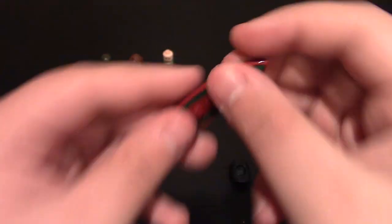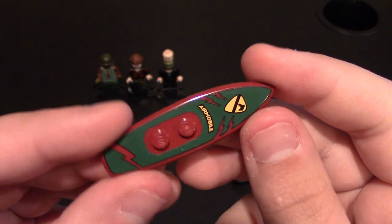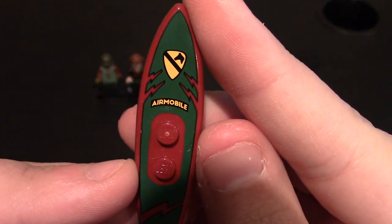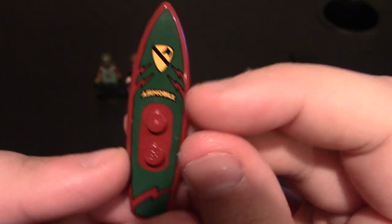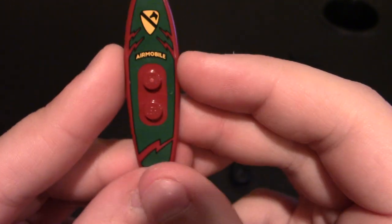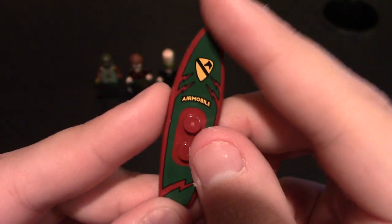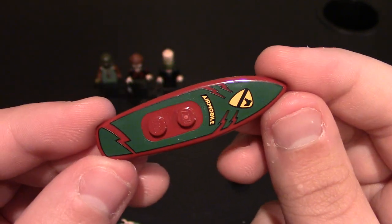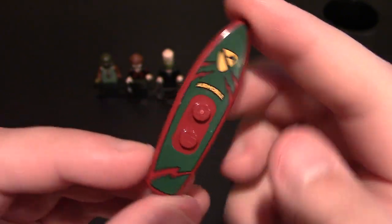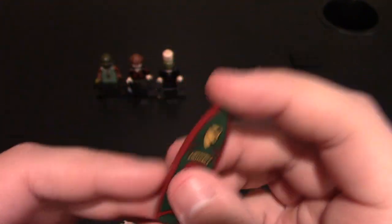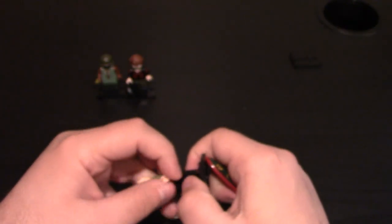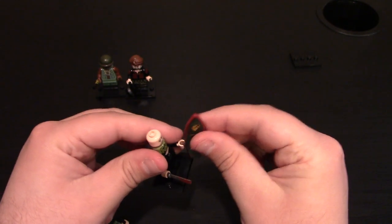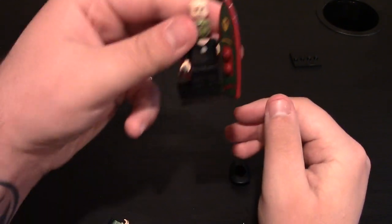It also comes with the signature surfboard that is printed. You can see it says Air Mobile, has their logo, printing on it, lightning strikes on the sides and across the bottom. This is custom printed but it is a Lego surfboard. An awesome accessory, this is in the movie.